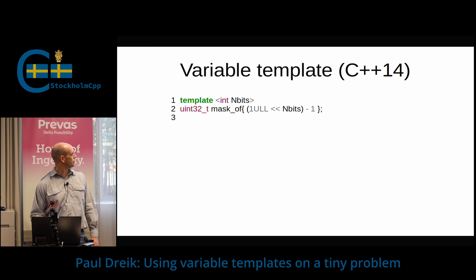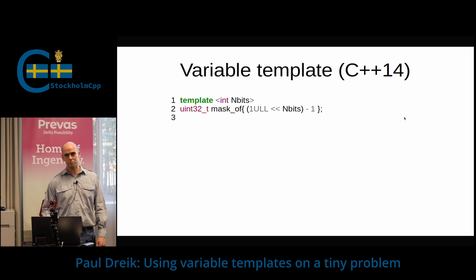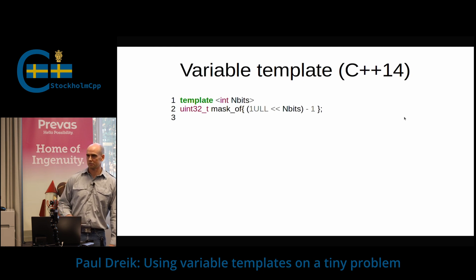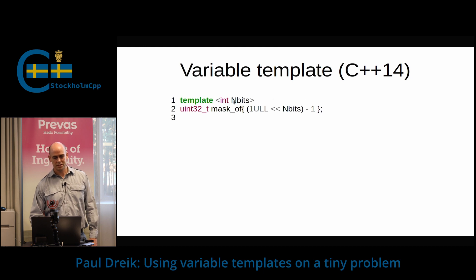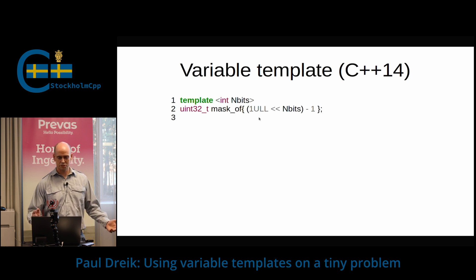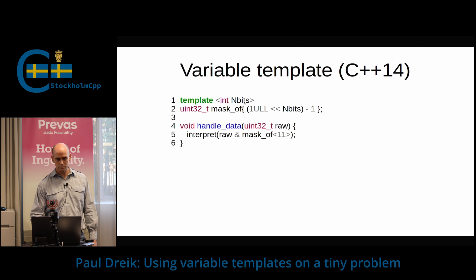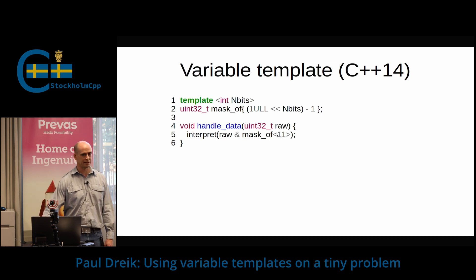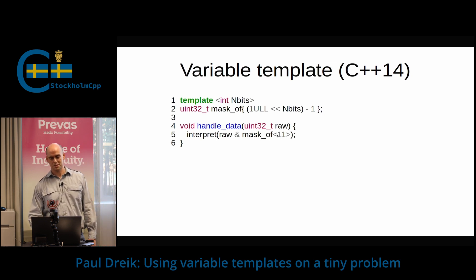So I then tried a variable template, which is something that was introduced in C++14. So it's a variable, but it's a template — pretty much an ordinary variable, just templated. And this is the call site. Instead of parentheses, you have angle brackets. So this is readable. That's fine.